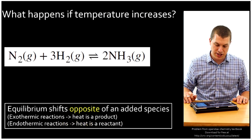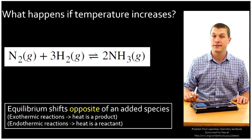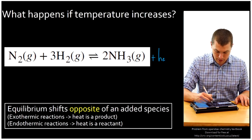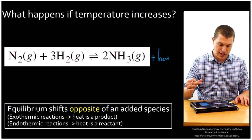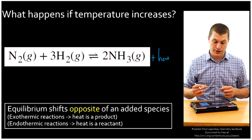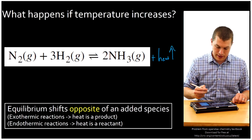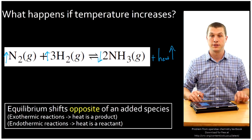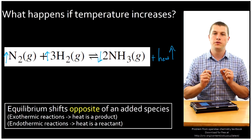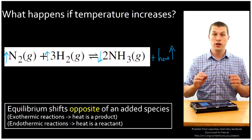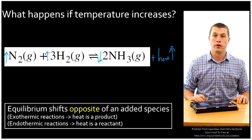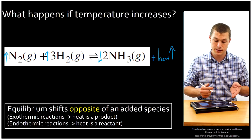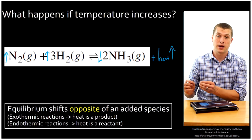What happens if we change the temperature? That depends on whether your reaction is exothermic or endothermic. This reaction turns out to be exothermic, meaning it produces heat. We can think about heat as being another product. So if I add heat — if I increase the temperature — it's like increasing the heat, and that will make my ammonia drop and my hydrogen and nitrogen increase, shifting to the opposite side. One difference here: when I change the temperature, it actually changes the equilibrium constant itself. It will shift to favor reactants for an exothermic reaction, and favor products for an endothermic reaction.